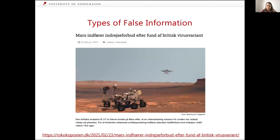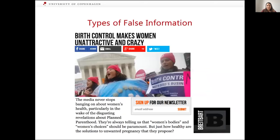There are also satirical websites like The Onion that make up full stories just for satirical purposes. This one here says that Mars is implementing a travel ban after they found a very British virus variant — of course it's false, but it's close enough to the truth that people might struggle with it, or machine learning models might too. And there are websites with a very strong political agenda publishing skewed articles, like one saying birth control makes women unattractive and crazy — a description of some scientific articles about the downsides of birth control, but completely over the top in describing the side effects.